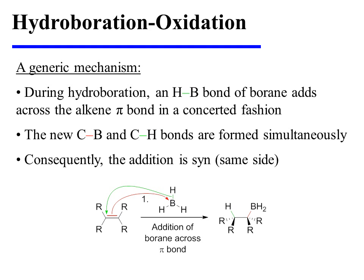During the hydroboration step, the hydrogen-boron bond of borane adds across the alkene pi bond in a concerted fashion, meaning that the new carbon-to-boron and carbon-to-hydrogen bonds are formed simultaneously. Consequently, this addition is syn — in other words, both groups add to the same side of the alkene.